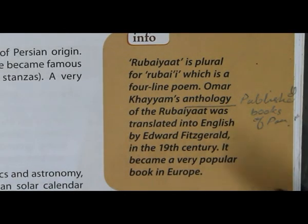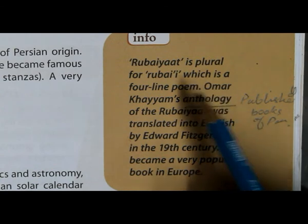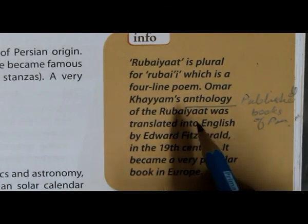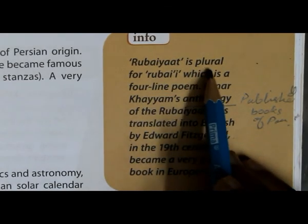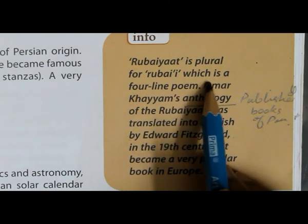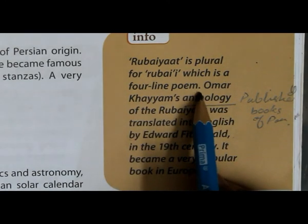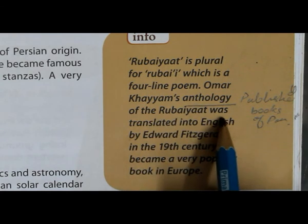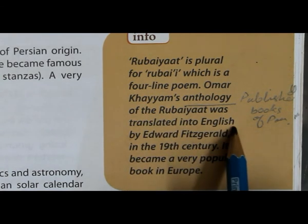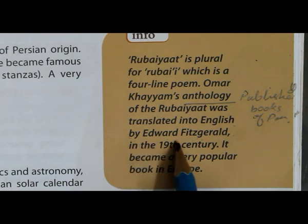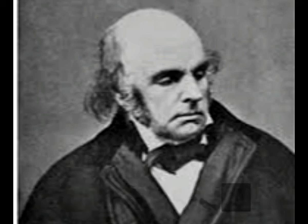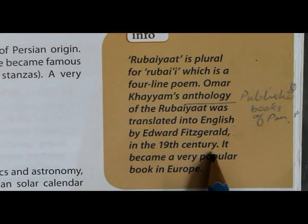On page number 59, there is information about the Rubaiyat of Umar Khayyam. Rubaiyat is plural for rubai, which is a four-line poem. Umar Khayyam's anthology of the Rubaiyat was translated into English by Edward Fitzgerald. In the 19th century, it became a very popular book in Europe.